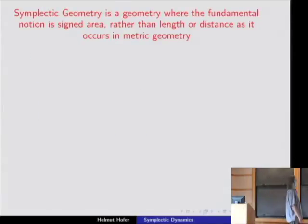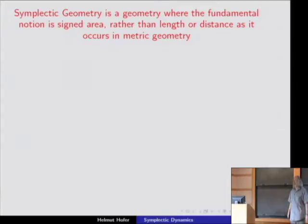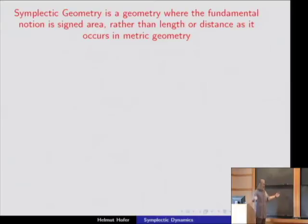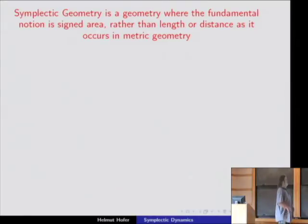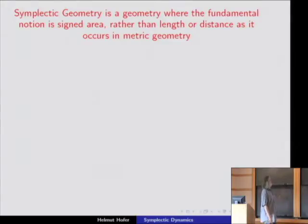So what is symplectic geometry? Symplectic geometry is a geometry where the fundamental notion is a signed area. We don't grow up in a world where everything is a signed area — most things around us are distance and length. We grow up feeling comfortable with a notion like a metric. But here it's quite a different basic notion, which is a little hard to digest at first.